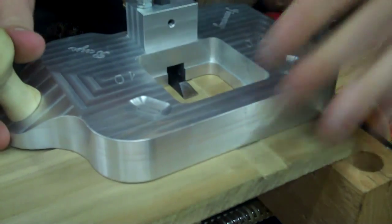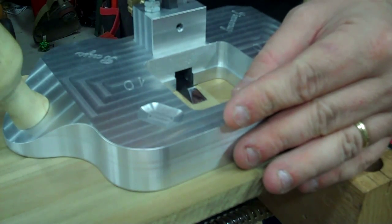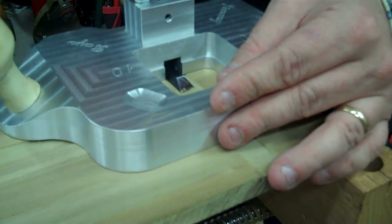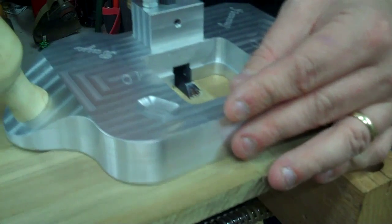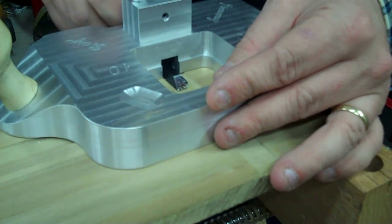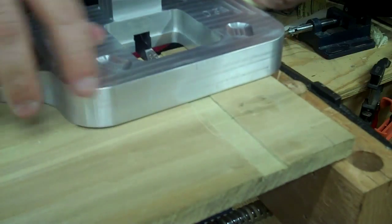And start with a high spot, should be right around in here. Adjust our cutter down. Now by using a 10-32 bolt in our cutter adjustment knob here, we know that one turn of the knob is a 32nd of an inch.